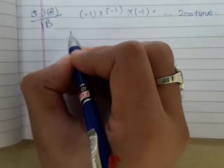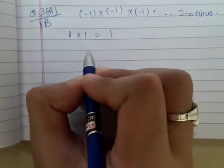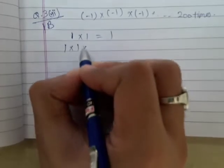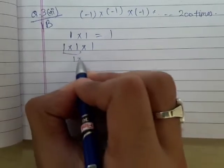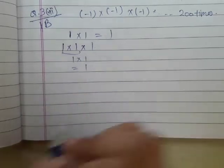If you multiply 1 by 1, you will get 1. If you multiply 1 three times, so 1 times 1 and then multiply this 1, again you will get 1.